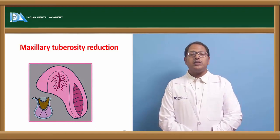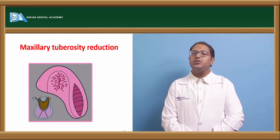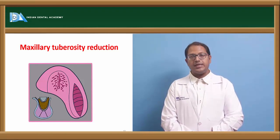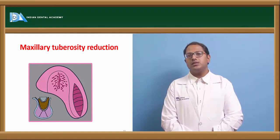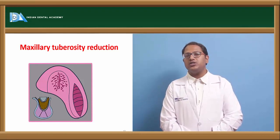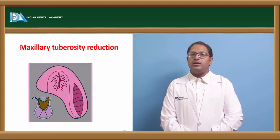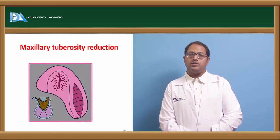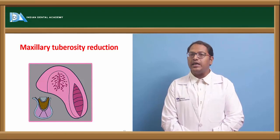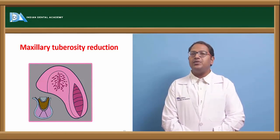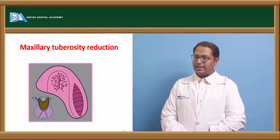Maxillary tuberosity reduction is another important aspect. The maxillary tuberosity is present posterior to the third molar and is a limiting structure — our denture limits over there. But if the maxillary tuberosity is bigger in size, the denture will become heavier and will lose its tight contact with the posterior palatal seal area. So we need to recontour or reduce the size of the maxillary tuberosity.